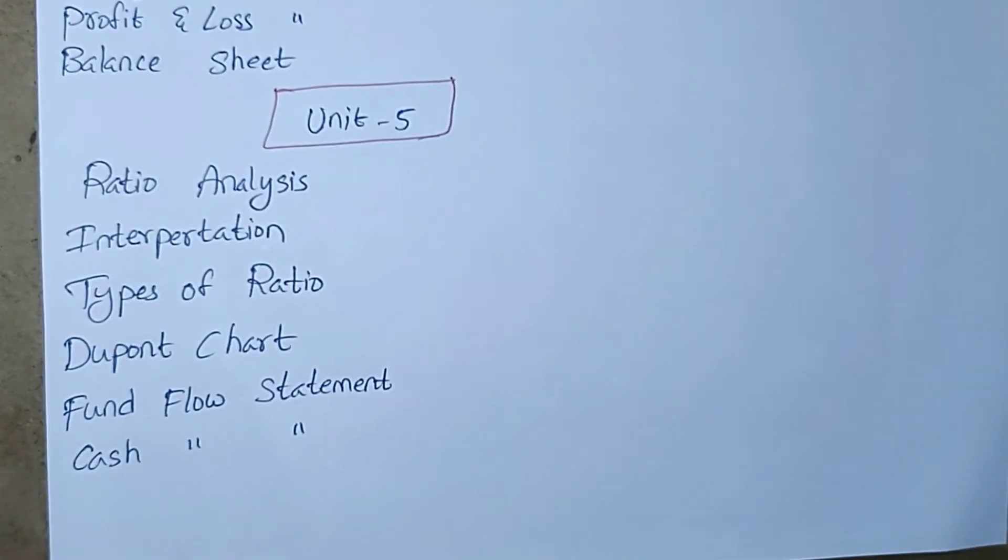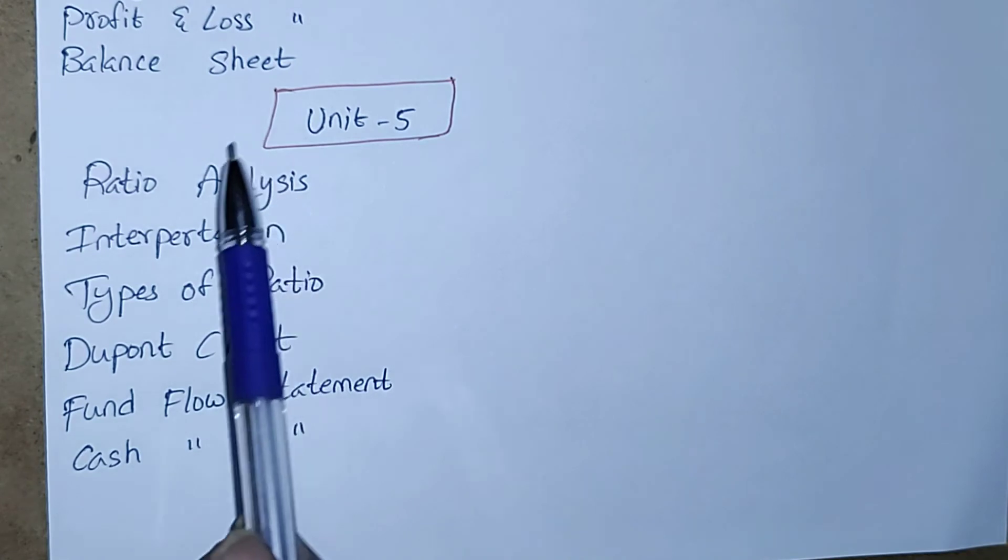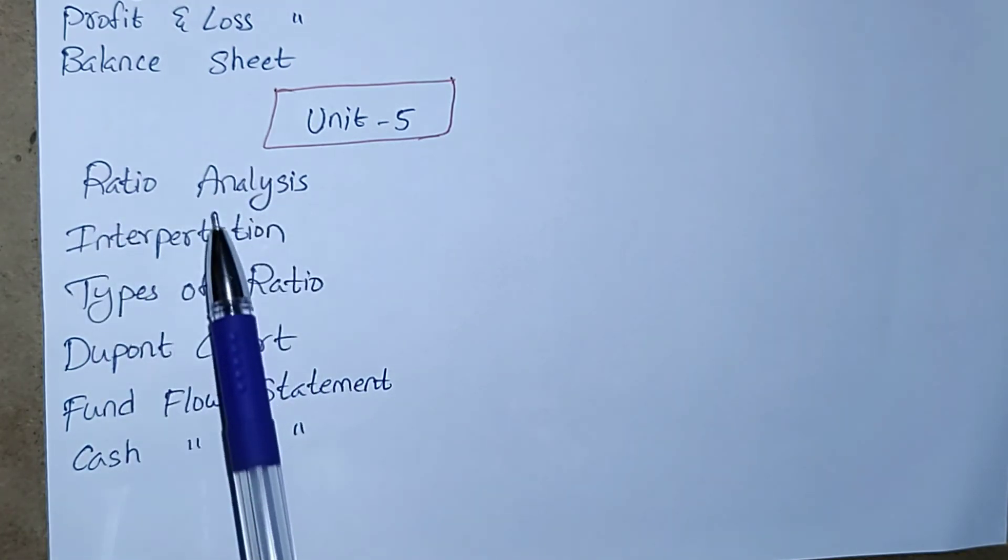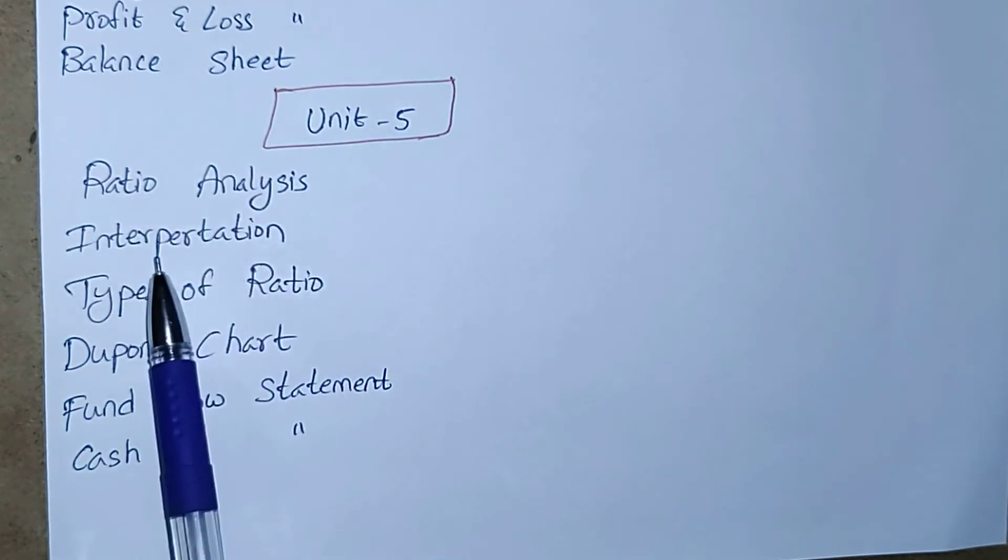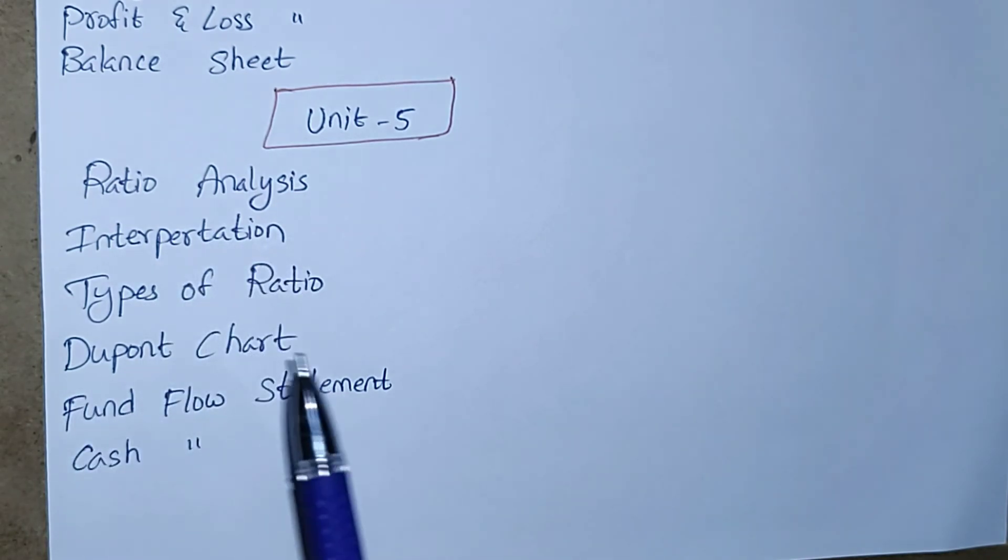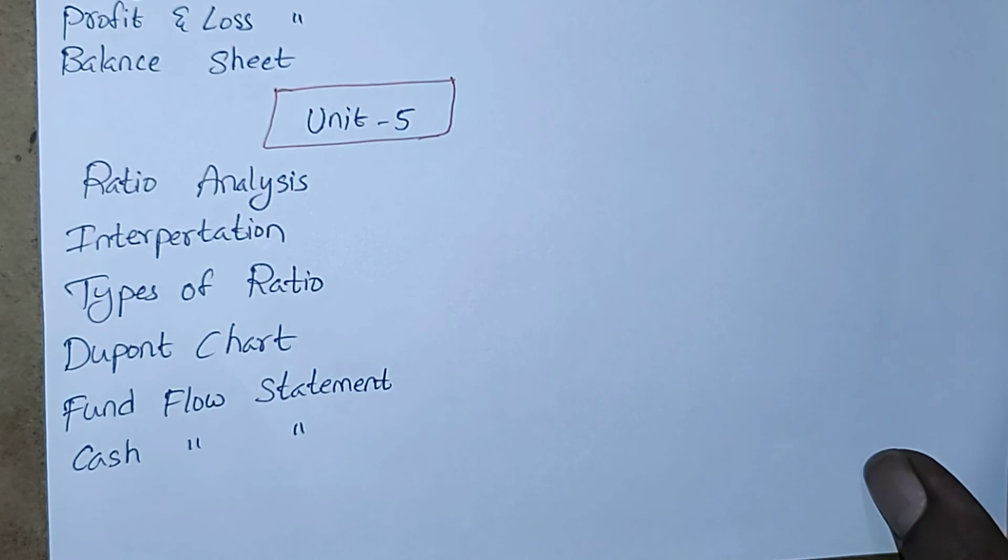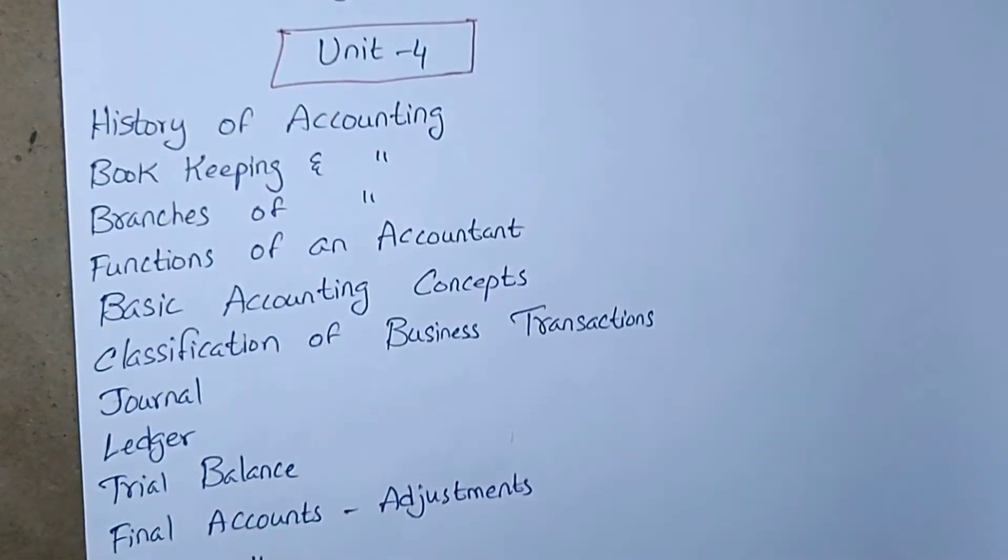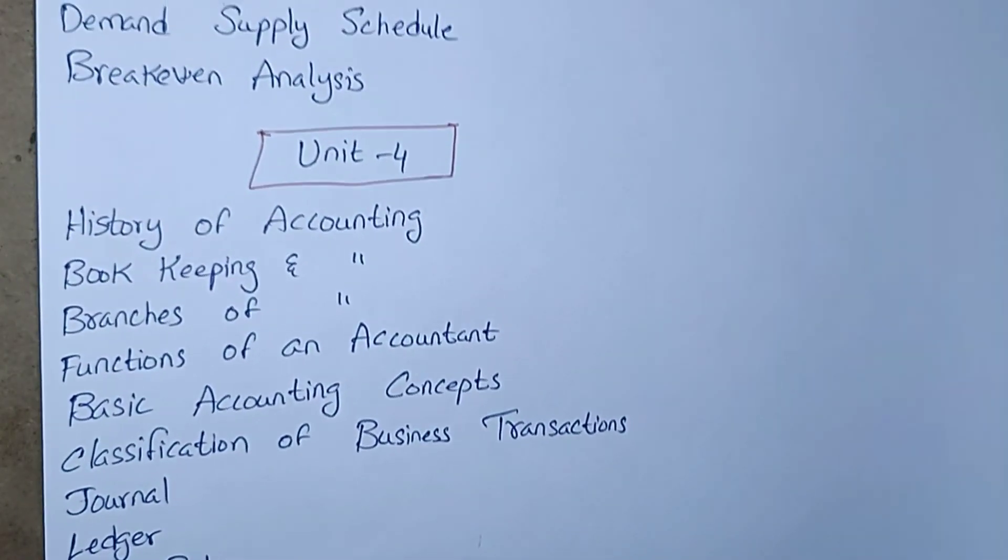Fifth unit: ratio analysis, interpretation, types of ratio, DuPont chart, fund flow statement, and cash flow statement. Here also you will get one problem. Otherwise, you may get some theory questions from ratio analysis like what are the types of ratios or explain the DuPont chart. For today's class, I think all of you understood these five units. You can understand it's a preparation strategy for your buffer. You can follow this one.